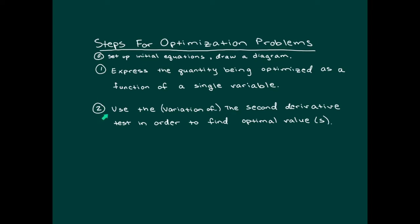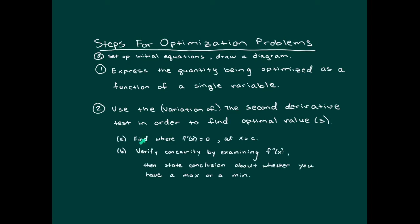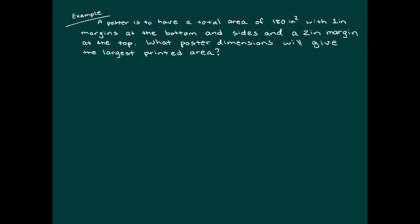The second step is to use the variation of either the second or first derivative test to show where the optimal value is obtained. For the second derivative test, find the critical point where the first derivative equals zero, then examine the concavity to determine whether you have a max or a min. Let's do a problem.